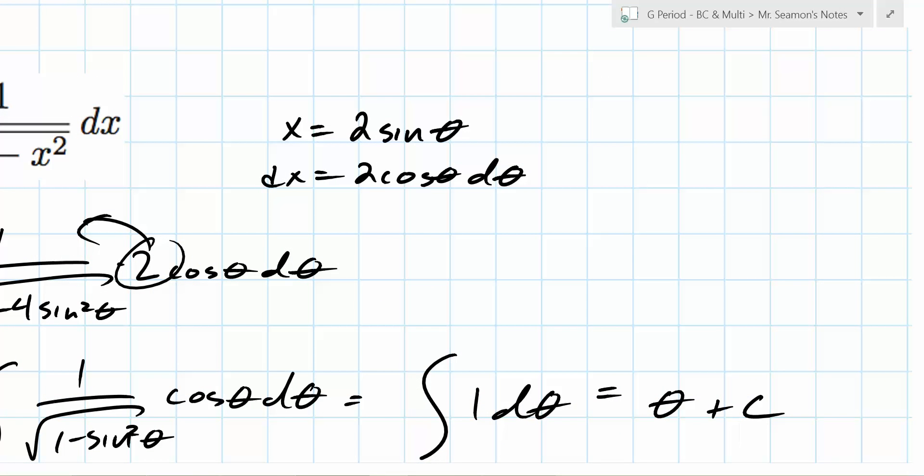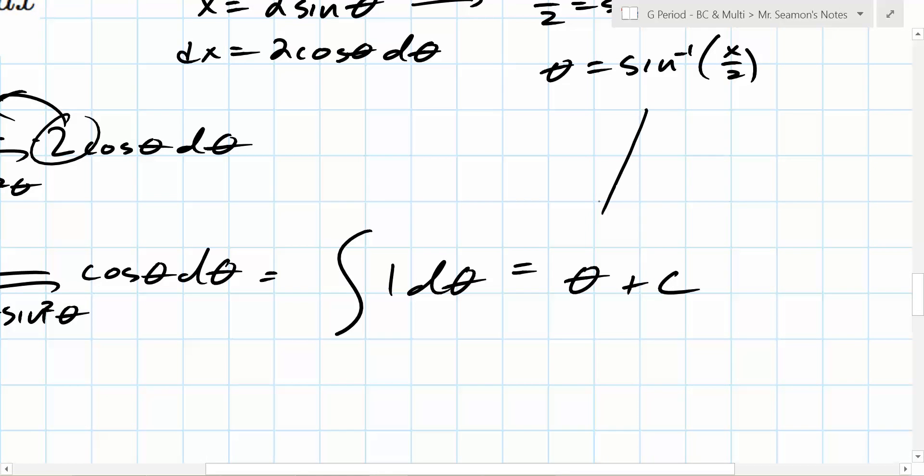I just want it to be theta plus C. Now you have to be really careful about this, though, because it's not written in terms of x anymore, right? So if we want to write it in terms of x, what do we have to do first here? The sine inverse? Yeah, x over 2 equals sine theta, right? So we know that theta equals the sine inverse of what? X over 2.